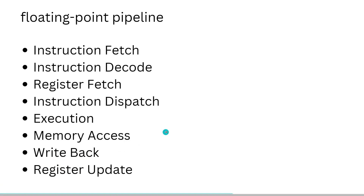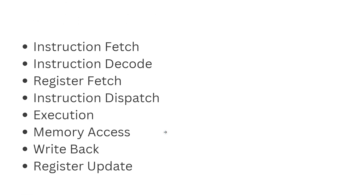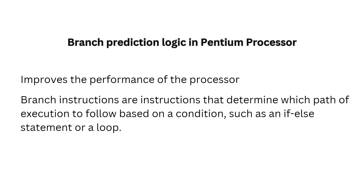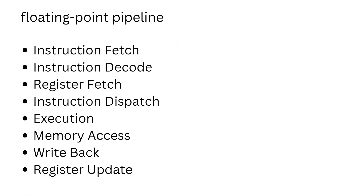Both pipelines operate simultaneously and independently, allowing for parallel execution of integer and floating-point instructions. This improves the overall performance and efficiency of the processor.